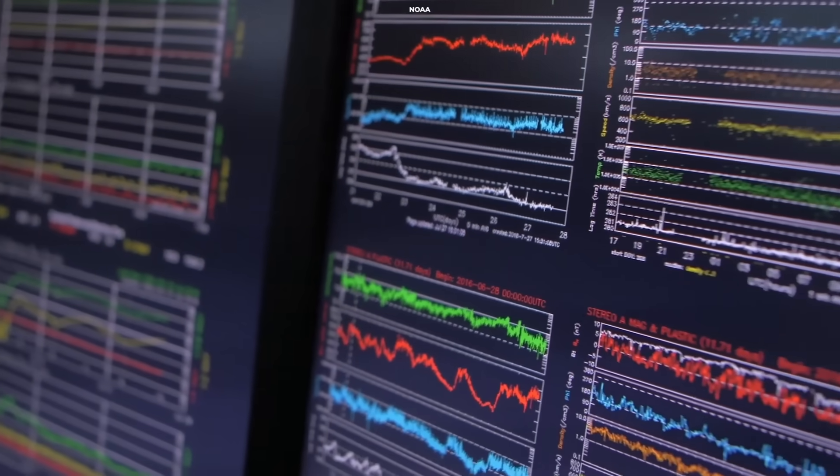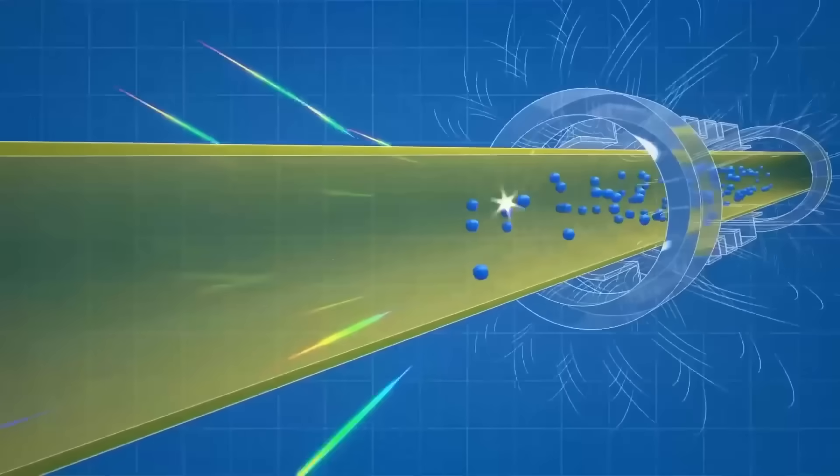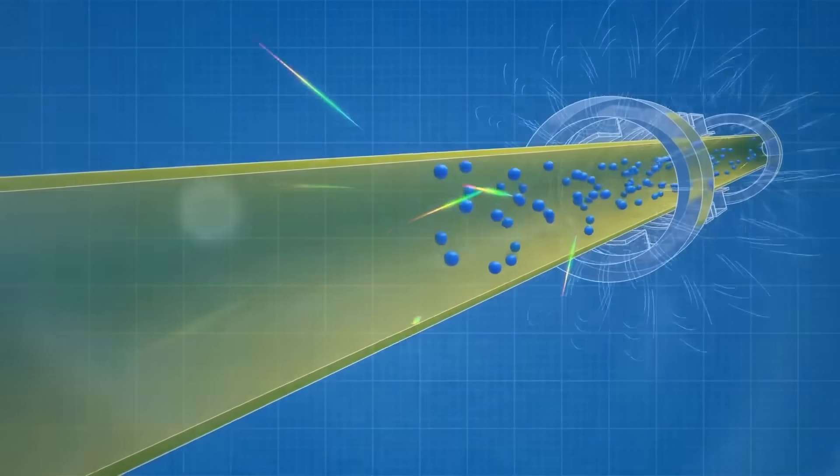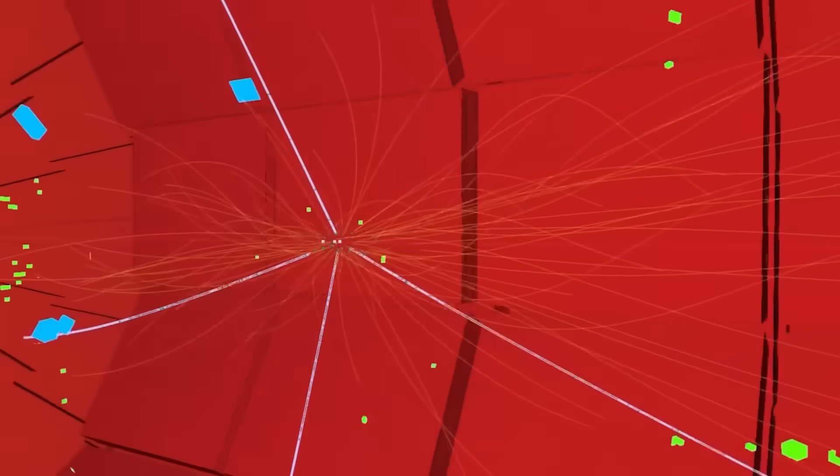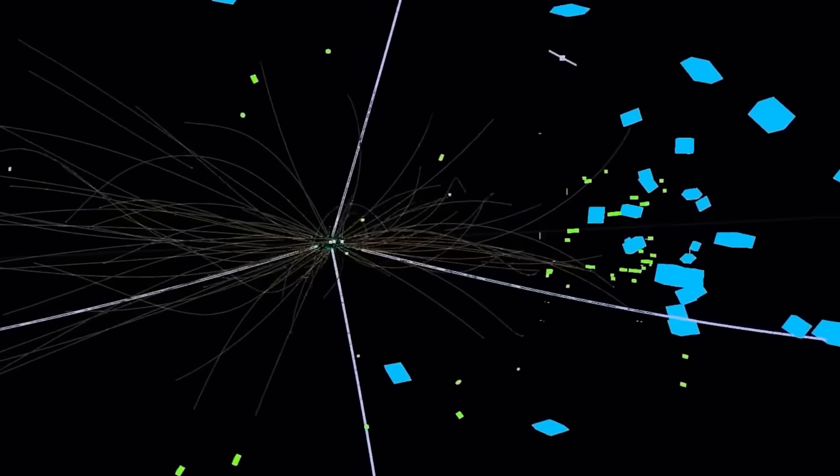In quantum physics, data typically follows predictable patterns even in its uncertainty. But this alleged anomaly showed something entirely different.